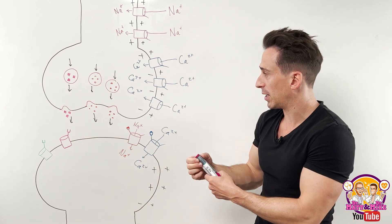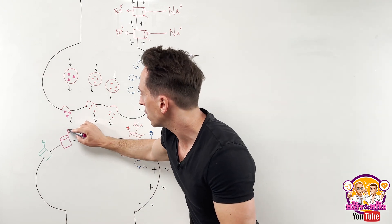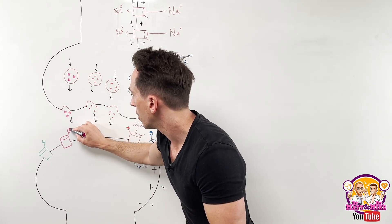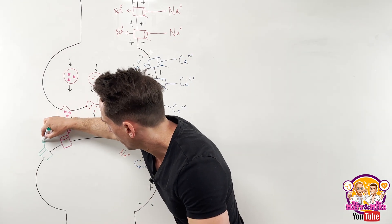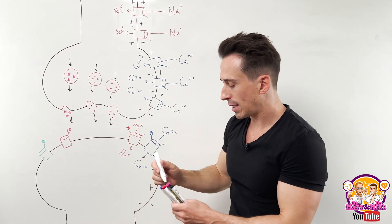Now here, if it's an inhibitory neurotransmitter, it's either going to bind to potassium channels or chloride channels. Now, why is that the case? Well, think about this.